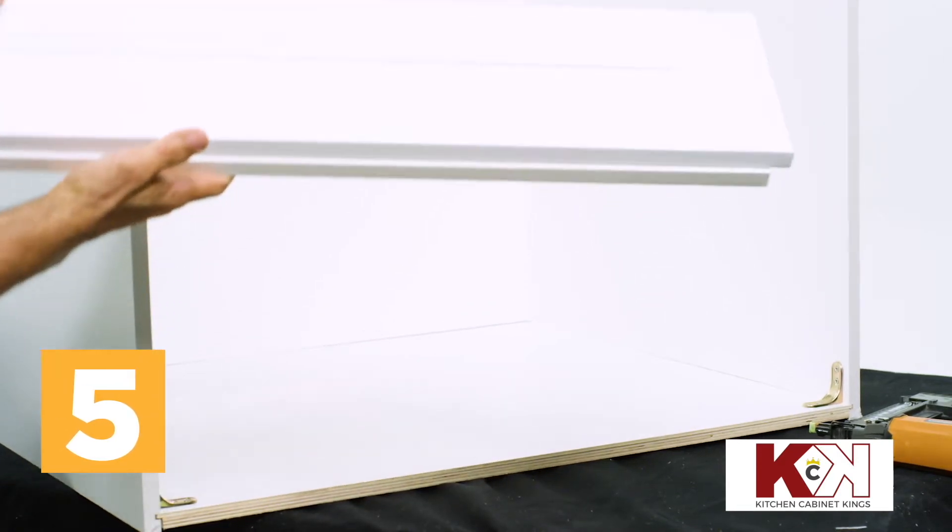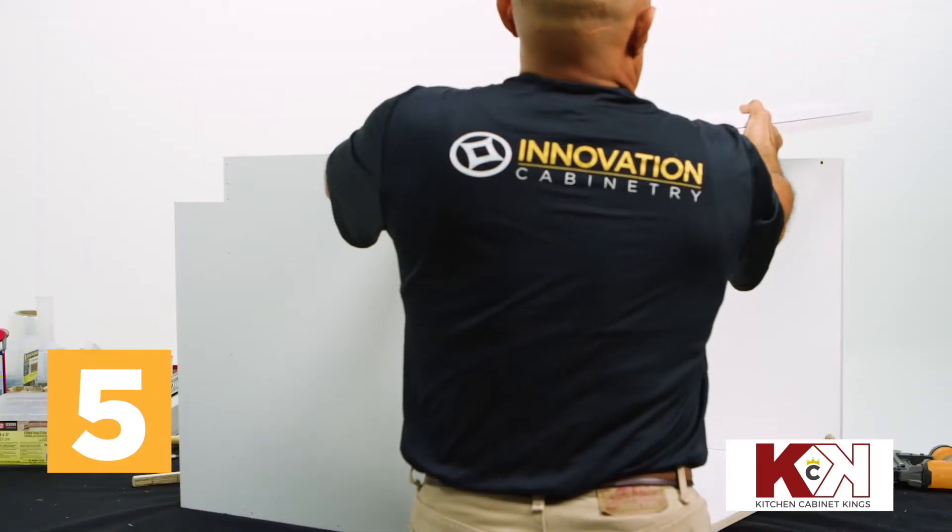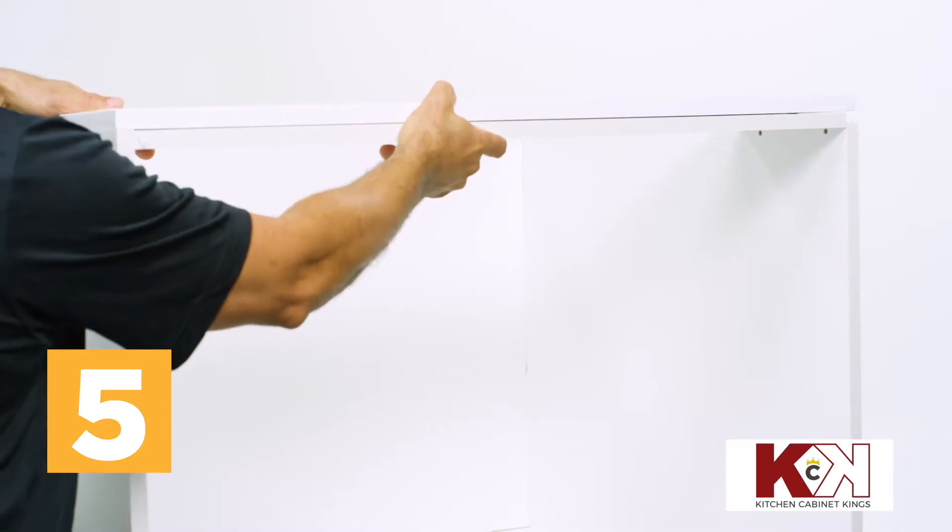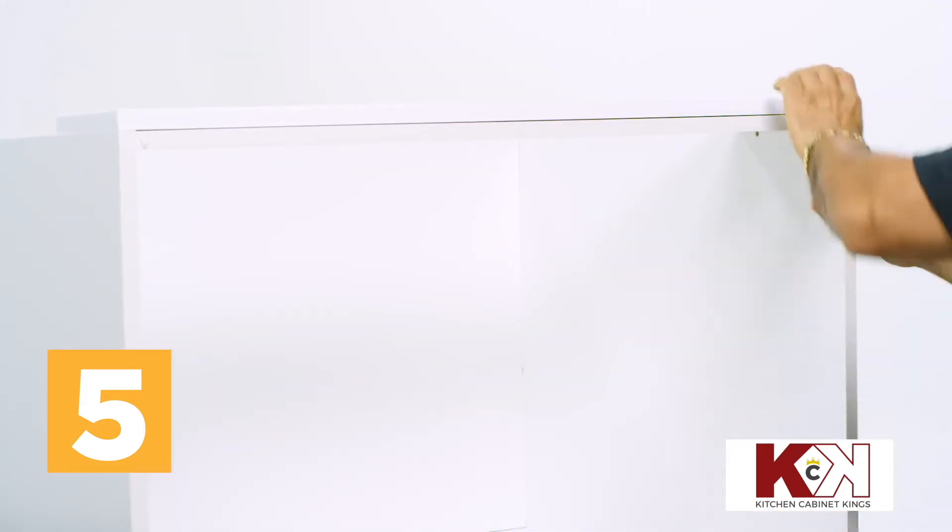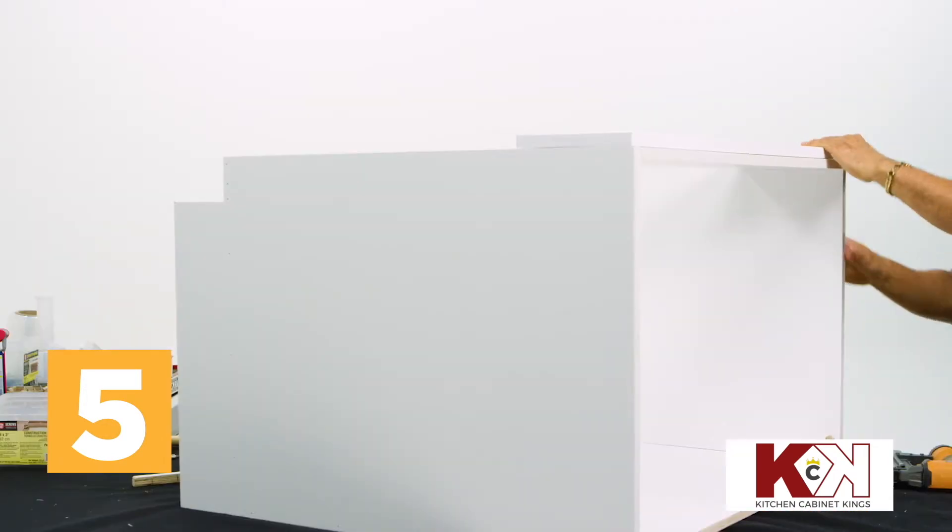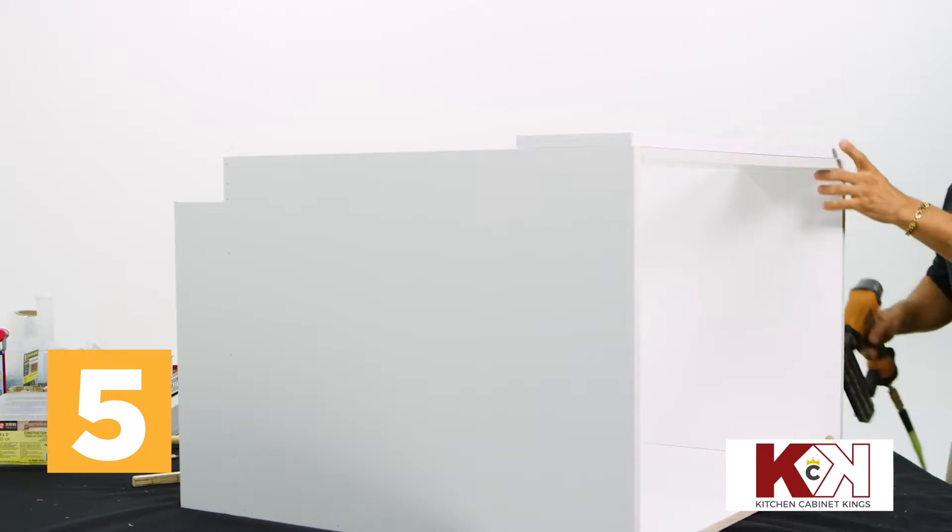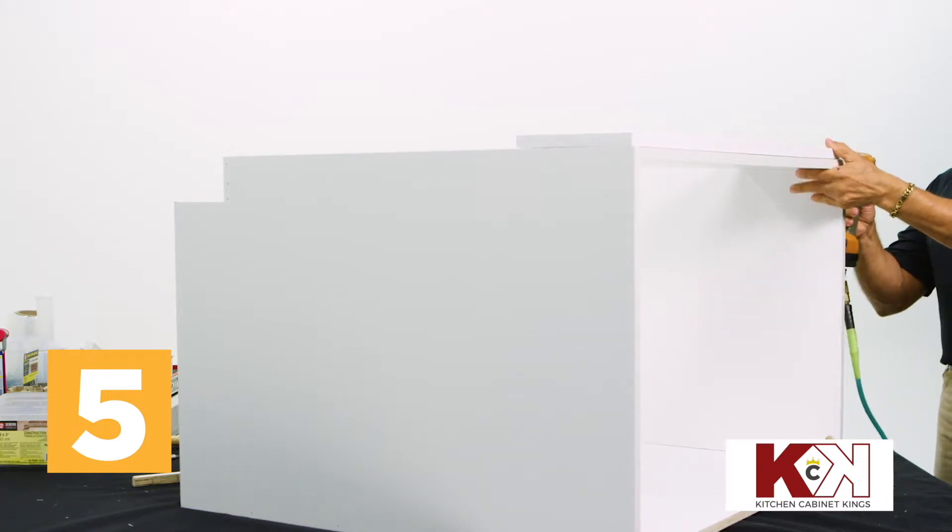Now place the long filler panel, beveled side out, across the top front of the base sides at the opposite end from the notched corners. Ensure the filler panel is aligned properly, then secure each end to the sides with a nail gun.